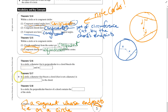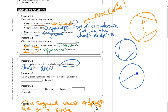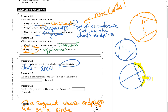Theorem 12-6: in a circle, a diameter that is perpendicular to a chord bisects the chord and its arcs. Bisect means cut into two congruent parts. So as long as the diameter is perpendicular to the chord, I get two congruent parts of the chord, and also this arc is congruent to that arc.